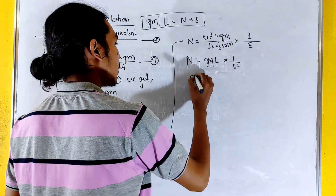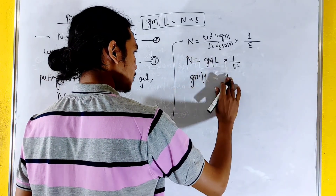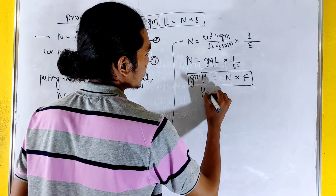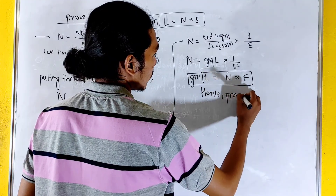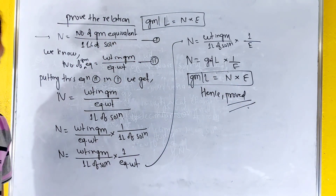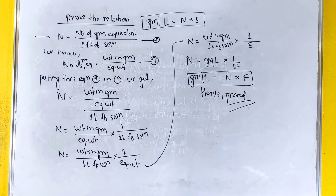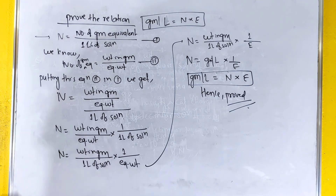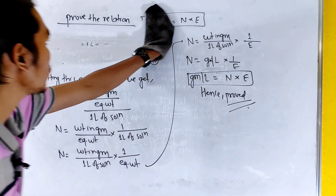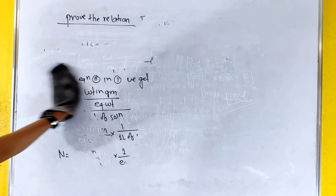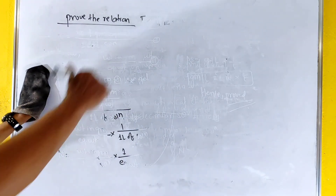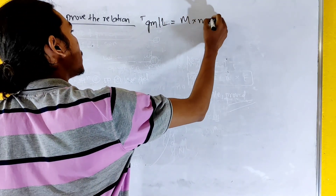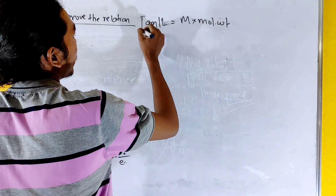We get normality equals weight in gram divided by E. Now, prove the relation: gram per liter equals molarity multiplied by molecular weight.